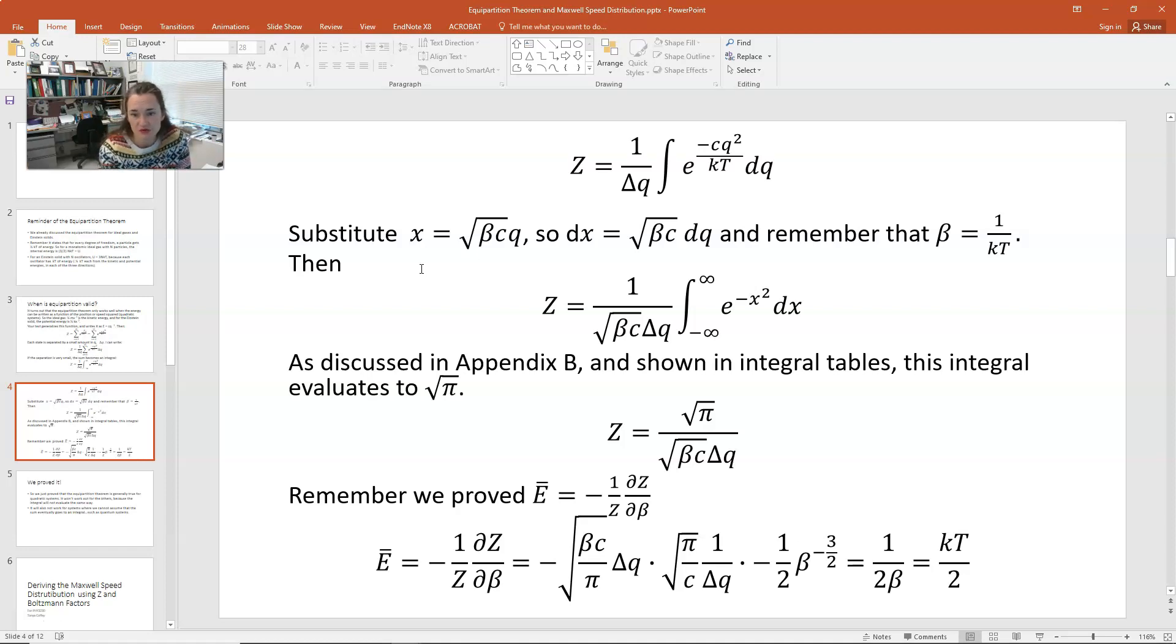e bar is equal to negative 1 over z partial z with respect to beta. The partial of z with respect to beta for z is equal to the square root of pi over beta c delta q would be equal to, first negative 1 over z would give you negative square root of beta c over pi times delta q. And then we would multiply that times partial of z with respect to beta, which would give us the constants again, the square root of pi over c times 1 over delta q times the derivative of beta to the minus 1 half power, which is minus 1 half beta to the minus 3 halves power. So what we have here, if you look at all these things multiplied times one another, we have the constants canceling out. The c over pi cancels out with the pi over c in the square root. The delta q cancels out with the delta q in the denominator. The minus sign cancels out with the minus sign.